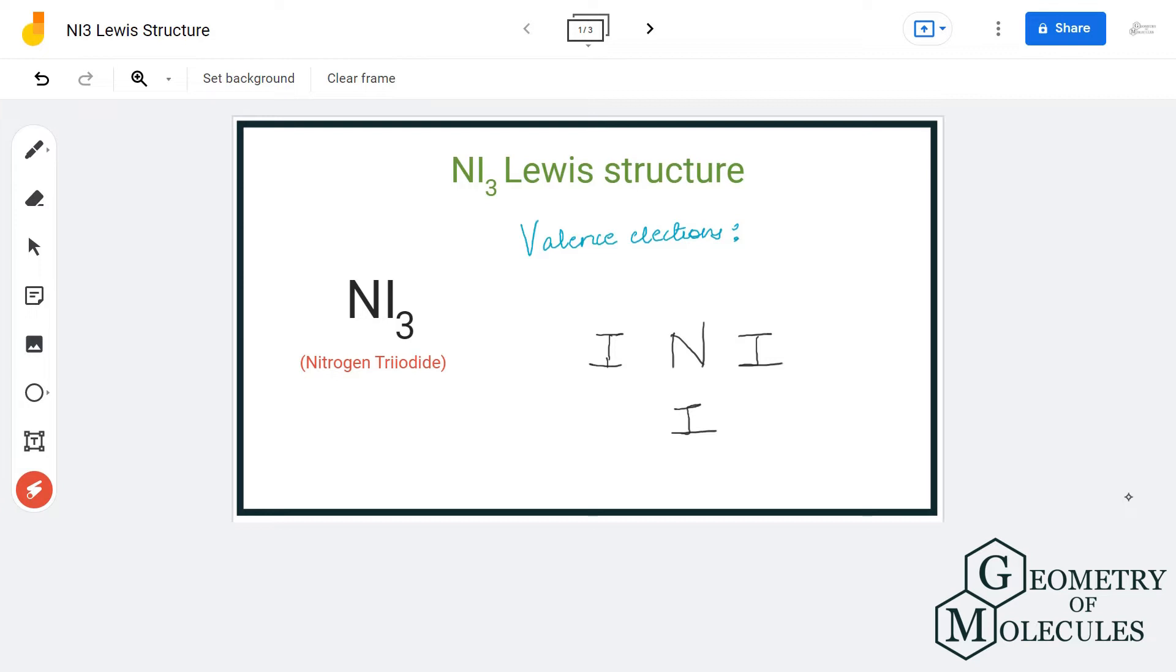Hi guys, welcome back to our channel. In today's video we are going to help you with NI3 Lewis structure. It is a chemical formula for nitrogen triiodide, and to determine its Lewis structure we will first find out the total number of valence electrons.